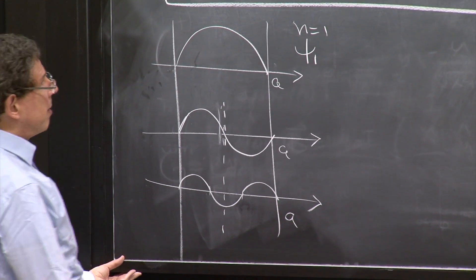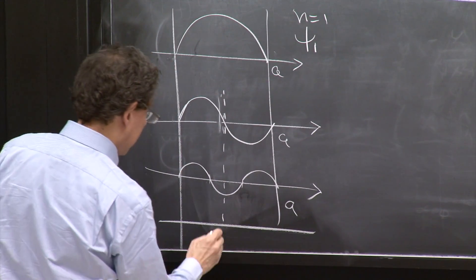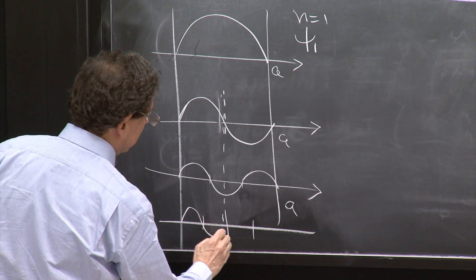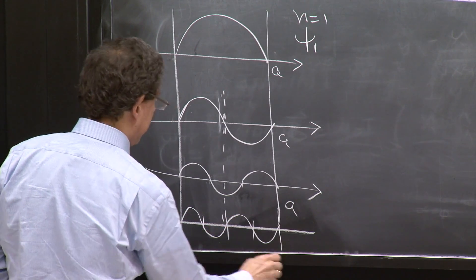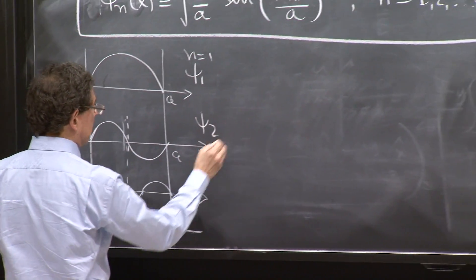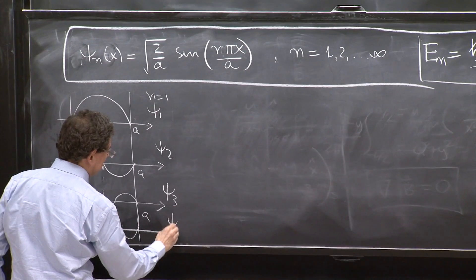And I could do one more. This one would be with four cycles: 2, 3, 4. So this is ψ₁, ψ₂, ψ₃, and ψ₄.